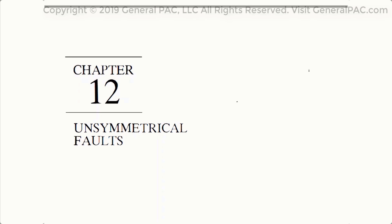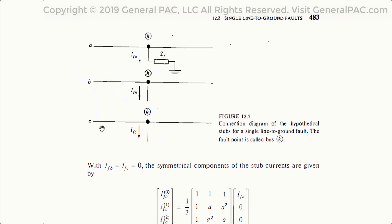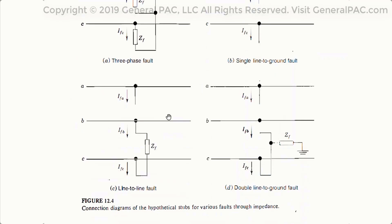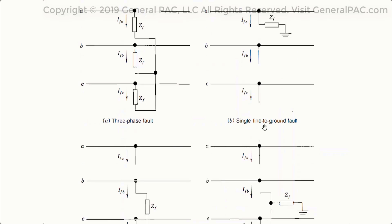In this video tutorial, Part 1, we're going to be reviewing a book by Granger and Stevenson, specifically Chapter 12 on unsymmetrical fault types. The topic is building the symmetrical component sequence network diagrams. We'll cover a lot of different fault types: three-phase faults, single-line-to-ground faults, line-to-line faults, and double-line-to-ground faults — really delving into how to construct the sequence network diagrams based on the fault type and the equations involved.